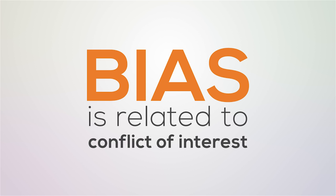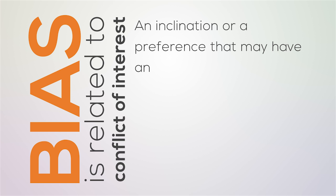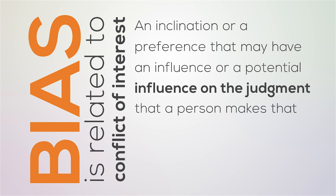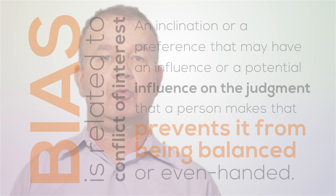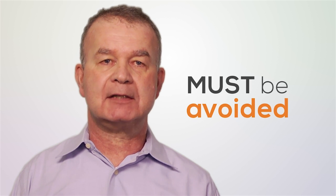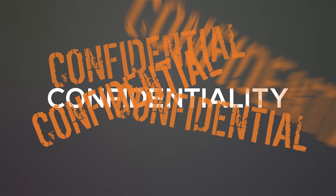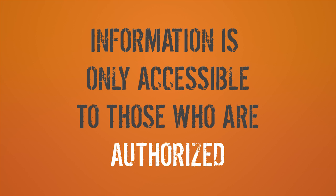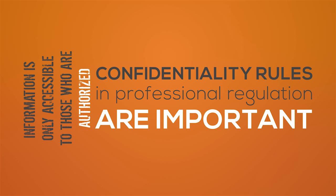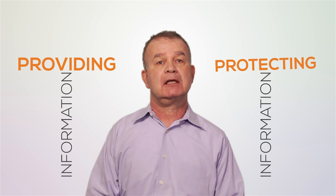Bias is related to conflict of interest. It's defined as an inclination or a preference that may have an influence or potential influence on the judgment a person makes that prevents it from being balanced or even-handed. Any situation where bias may be demonstrated or suspected must be avoided to ensure the integrity of regulatory processes and to avoid challenges to the impartiality of the adjudicators. Confidentiality essentially means that information is only accessible to those who are authorized. Confidentiality rules in professional regulation are really important, as these rules serve to limit information that can be disclosed and permit disclosure in appropriate circumstances, allowing a regulatory agency to balance the competing interests of public information and protection of specific information.